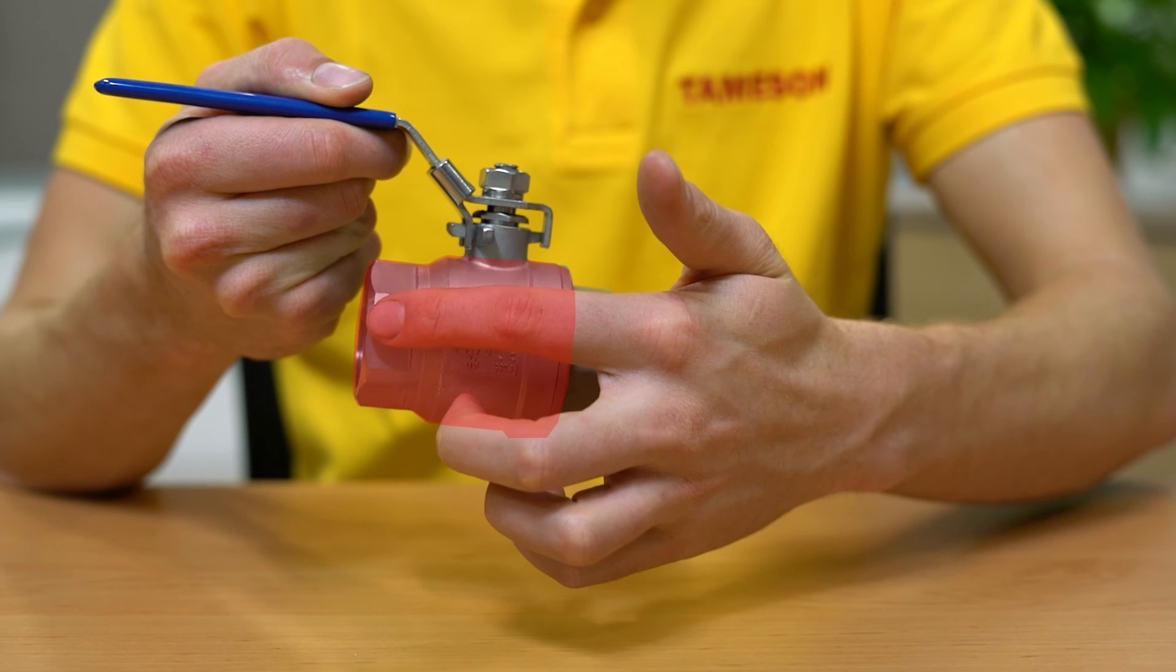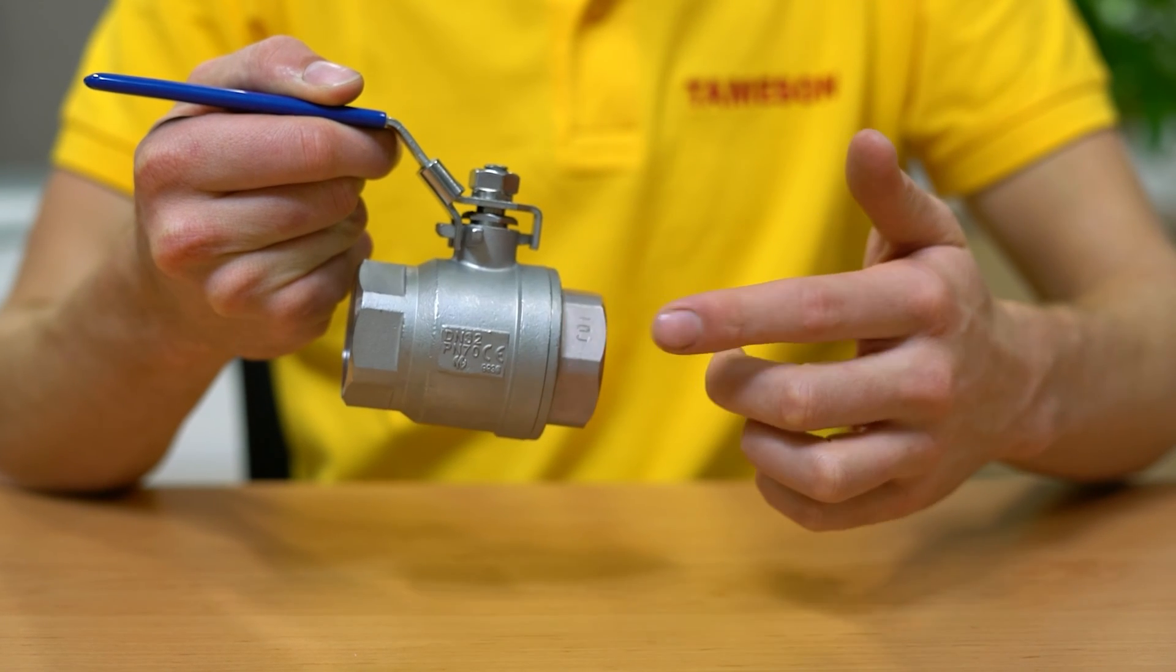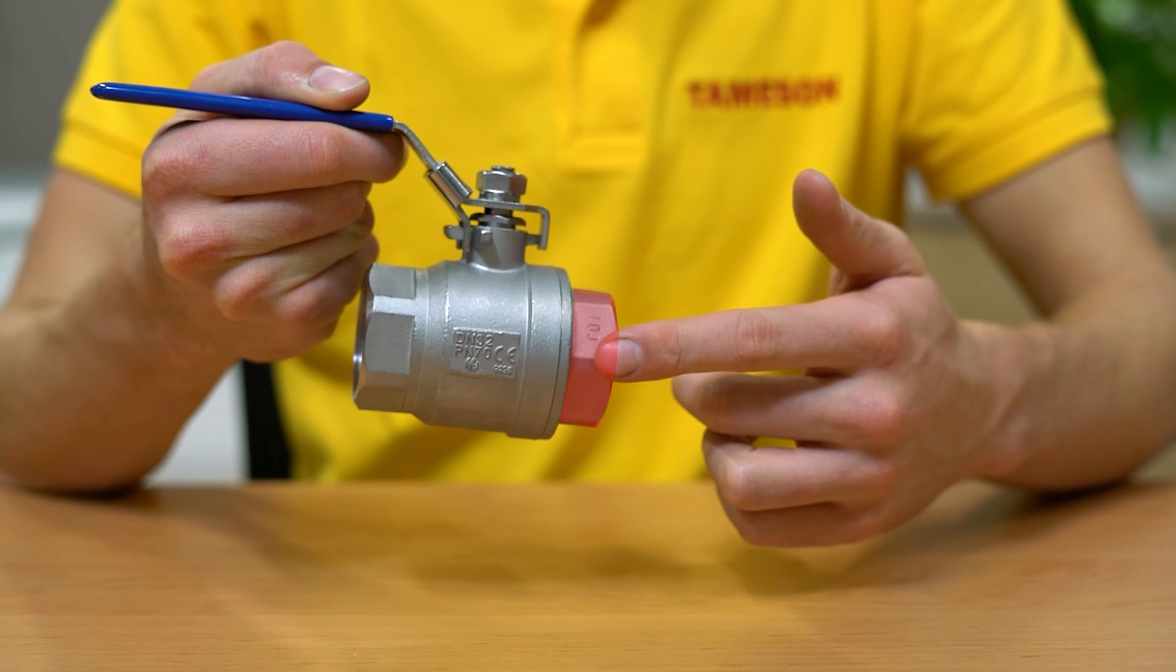A two-piece ball valve has two pieces, one containing the body and an end connection. A second piece that fits into the first piece, holding the trim in place and providing the second end connection. Once installed, these valves typically cannot be repaired unless they are removed from service.